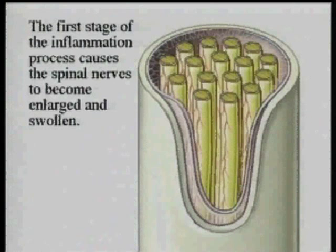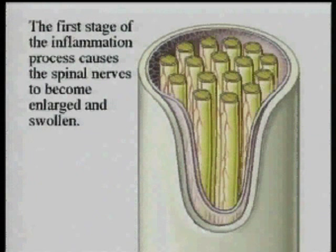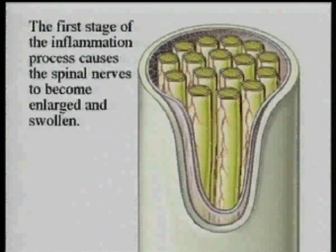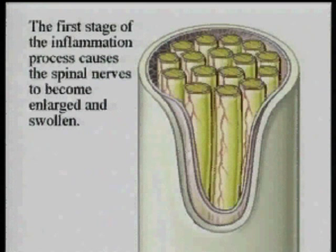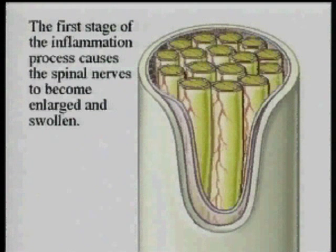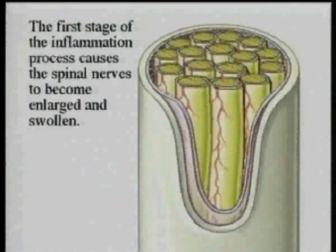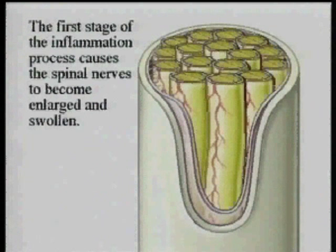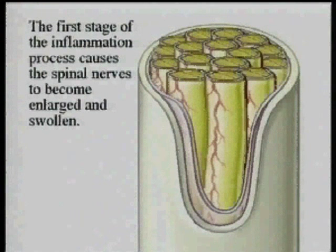The first stage of the inflammatory process causes the spinal nerves to become enlarged and swollen, as shown here. In addition to the swelling of the nerves, there is distention of the adjacent blood vessels, which become hyperemic. As the nerves swell, the subarachnoid space actually disappears, and very typically, the spinal fluid is squeezed out from in between the spinal nerves.